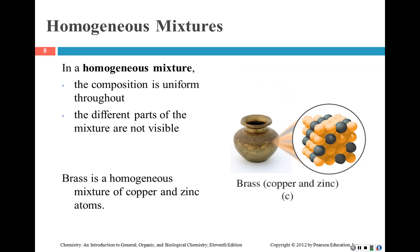You can have two types of mixtures. A homogeneous mixture means that the composition is uniform throughout — if I take a sample anywhere in a container of this homogeneous mixture, I will always get the same components and the same ratio of molecules. The example shown here is brass, but a homogeneous mixture would also be sodium chloride: whenever you take a sample, you always get that same proportion of sodium and chlorine.